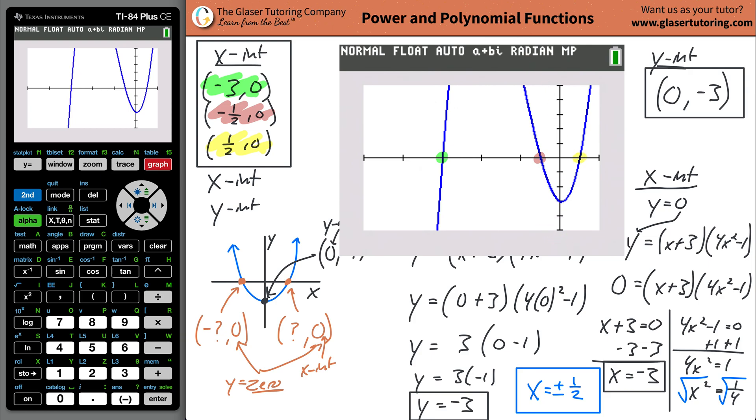And guess what? Last but not least, let's grab a different color. Last but not least, (0, -3), the y-intercept is found here. Look at how beautiful that is. So we checked ourself, and we know we're right.